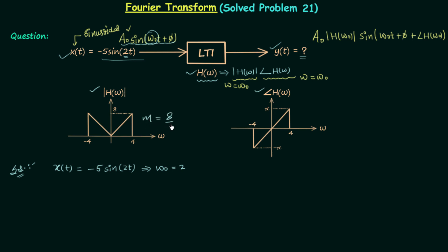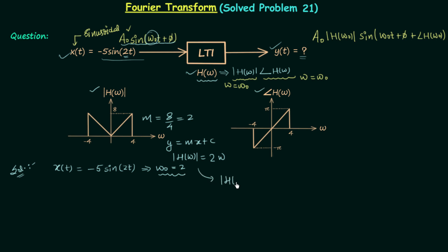The slope is equal to 8 divided by 4, which equals 2. Using y = mx + c, where y = |H(ω)|, m = 2, x = ω, and c = 0 because the line passes through the origin, we get |H(ω)| = 2ω. When ω = ω₀ = 2, we get |H(ω₀)| = 4.